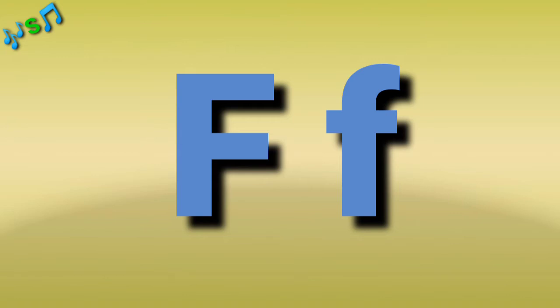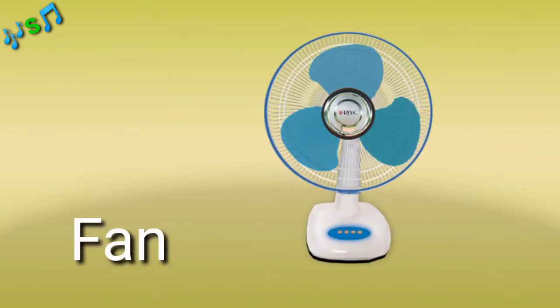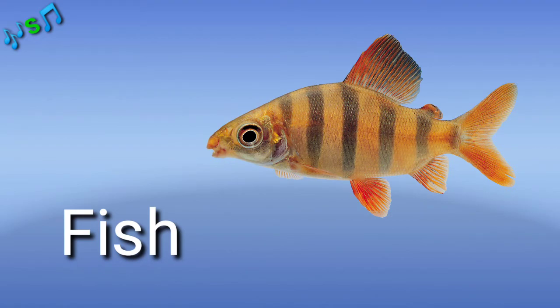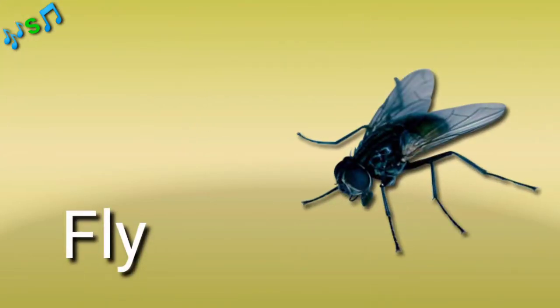This is a frock — F, R, O, C, K — frock. This is a fan — F, A, N — fan. This is a fish — F, I, S, H — fish. This is a fly — F, L, Y — fly.